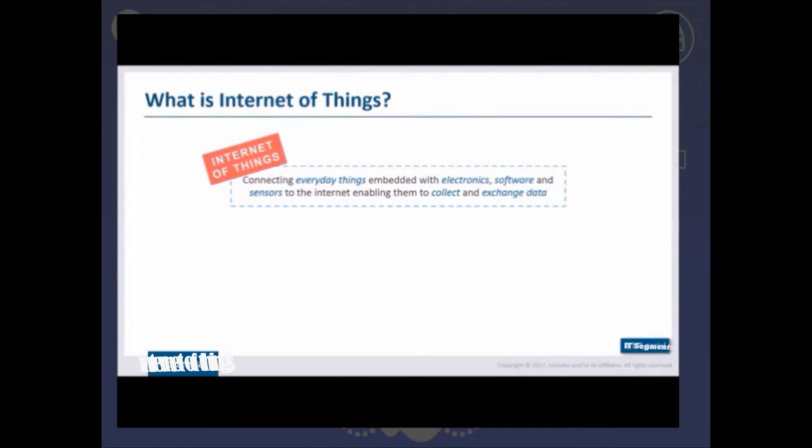Internet of Things connects everyday things embedded with electronics, software, or sensors to the internet. This enables us to collect as well as exchange data between these things. When I say things, it can be anything and everything.